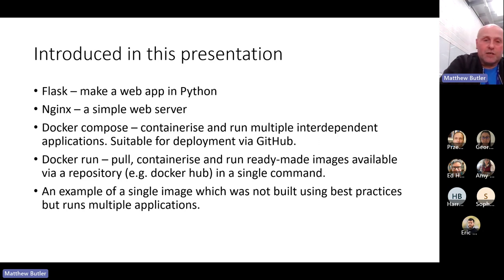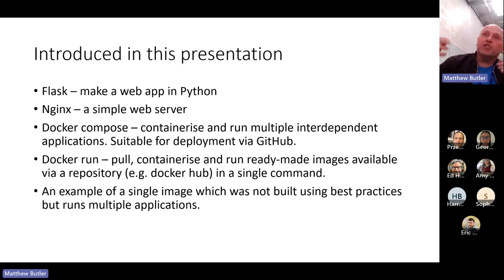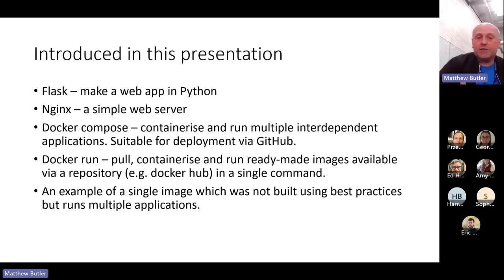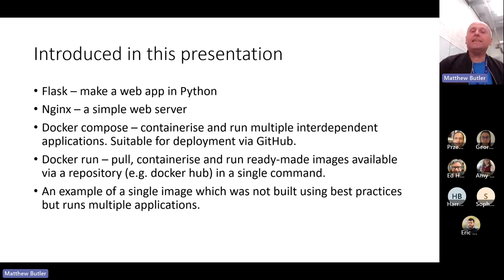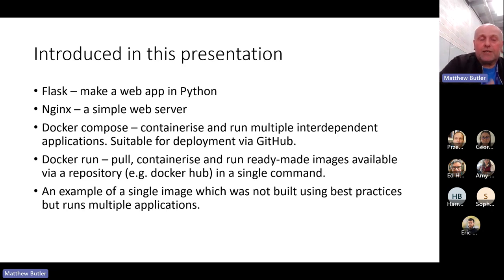If your PC is on the internet with a publicly available IP address, people can access your web server and use your Python script. There's going to be an example of that - the thing Harry was working on - and the way you can deploy it so you could install it on a web server remotely or share it. You'll have the option to download it, put it on GitHub, run a simple docker compose command, and it will produce both the Flask and nginx images and start them in a way that they can talk to each other, almost like magic.